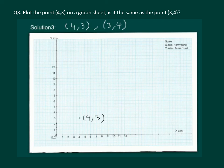Now let us plot 3,4. That means x coordinate 3 and y coordinate 4. And clearly 4,3 and 3,4 are two different points. And in the answer we will write from graph 4,3 and 3,4 are two different points.